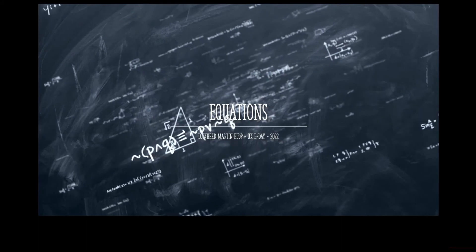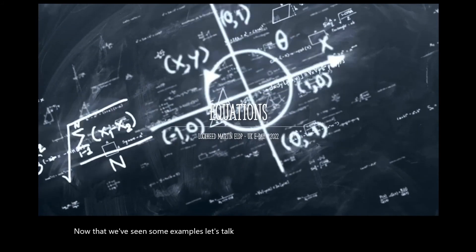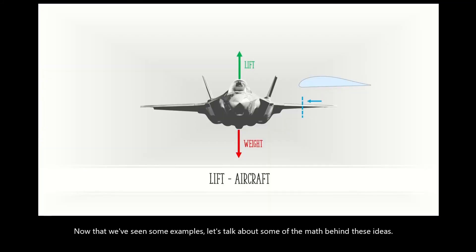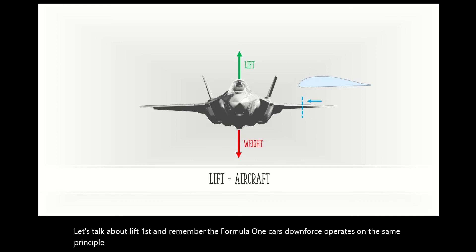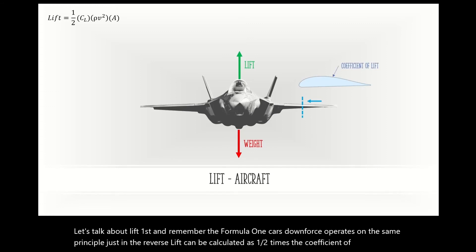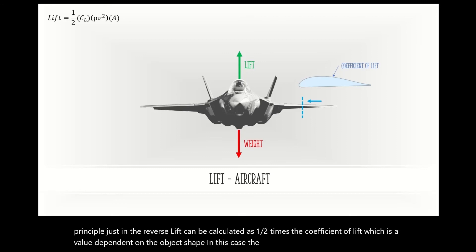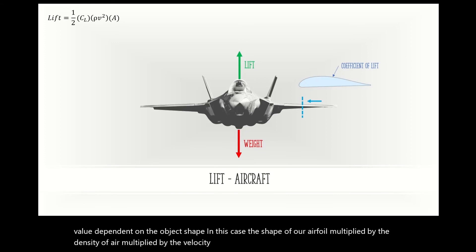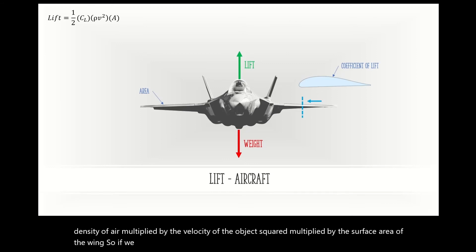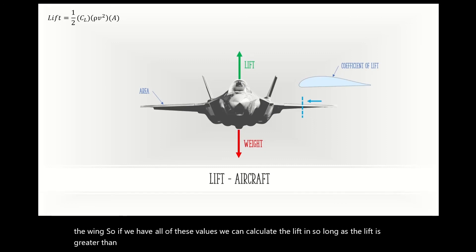Now that we've seen some examples, let's talk about some of the math behind these ideas. Let's talk about lift first — and remember, the Formula 1 car's downforce operates on the same principle, just in reverse. Lift can be calculated as one-half times the coefficient of lift (a value dependent on the object's shape, in this case the shape of our airfoil), multiplied by the density of air, multiplied by the velocity of the object squared, multiplied by the surface area of the wing. If we have all of these values, we can calculate the lift, and so long as the lift is greater than our weight, the object will move upwards and take flight.